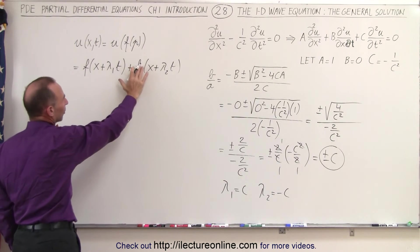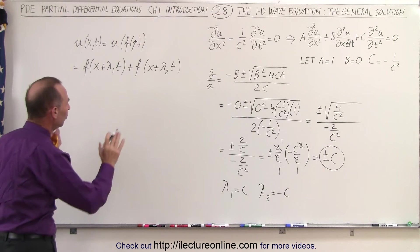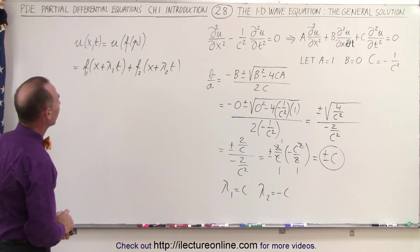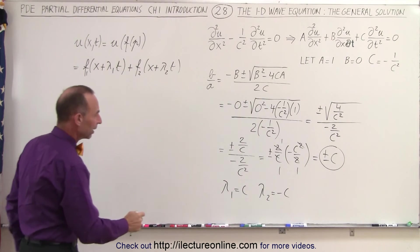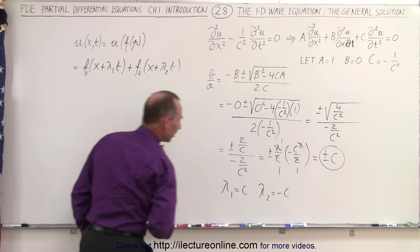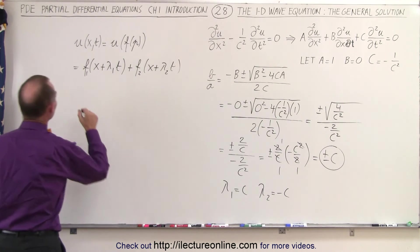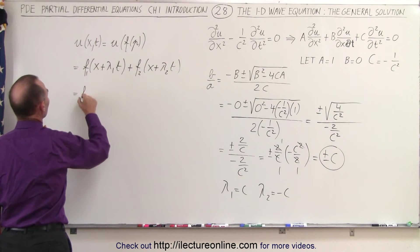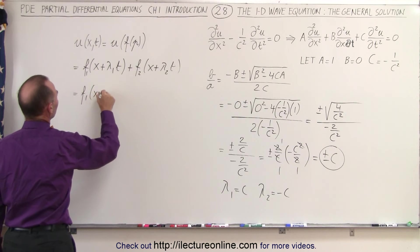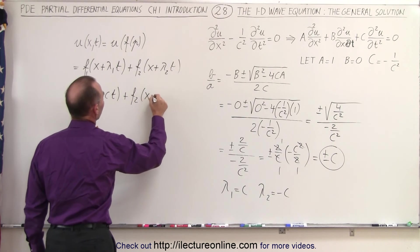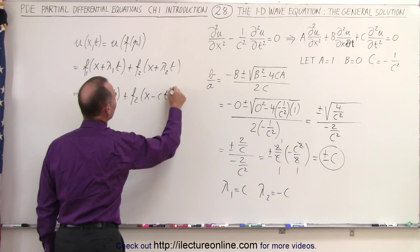You could probably put a g there, but it doesn't matter, it's two separate functions, so let's call a function 1 or function 2, so that we don't confuse that. We can then replace lambda 1 and lambda 2 by c and minus c, so this is equal to a first function of x plus c times t, plus a second function of x minus c times t.